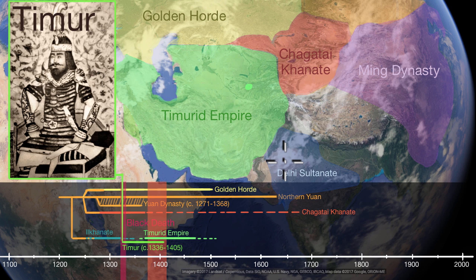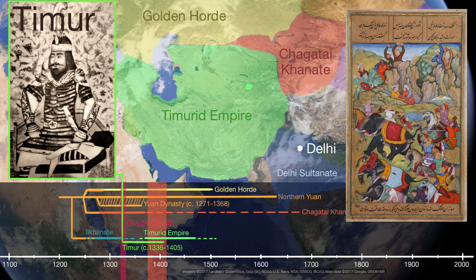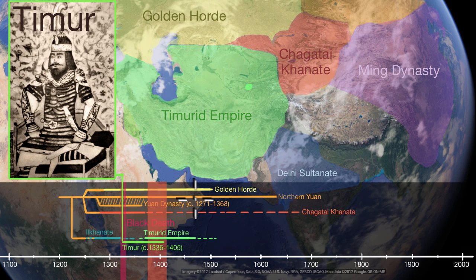His forces famously attacked the Delhi Sultanate, not hoping to conquer India, but to take its spoils. In 1398, he successfully defeated the Sultan, who had battle elephants, by sending camels with flames on their backs to scare the elephants. When his forces took Delhi, they killed 100,000 to 200,000 people and took the spoils of the city. There are estimates that Timur's forces killed as many as 17 million people as the empire expanded — roughly 5% of the world's population at that time.